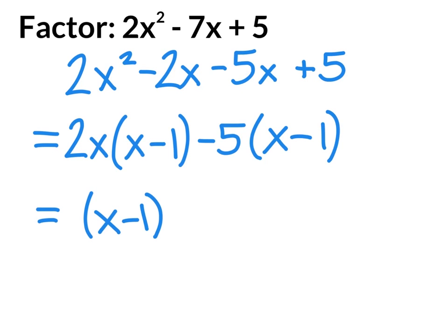x minus 1. And we're going to write what is outside the bracket, 2x and negative 5, in the other binomial as 2x minus 5. And that will be our final answer.